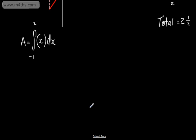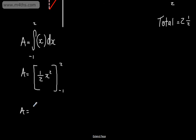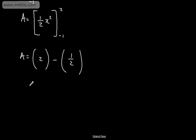Let's go ahead and evaluate this. The area will be equal to — integrating x gives 1/2 x², evaluated from x = -1 to x = 2. Substituting in 2 gives 1/2 of 2² = 2. Then subtracting the value at -1: (-1)² gives 1, times 1/2 gives 1/2. So instead of being 2 and a half, it's going to be 1 and a half, or 3 over 2.